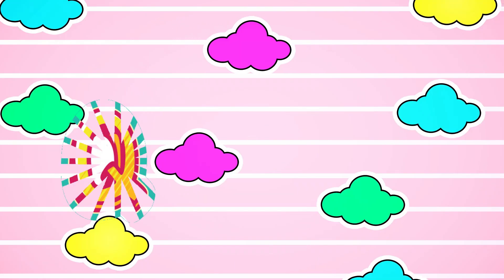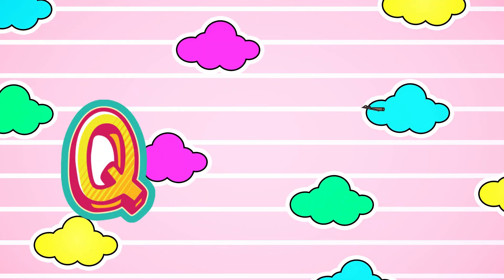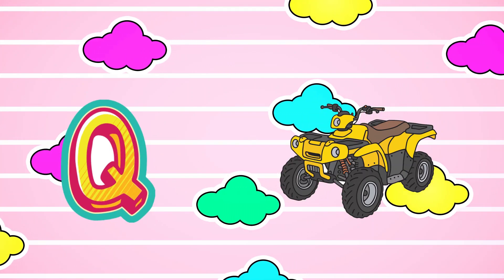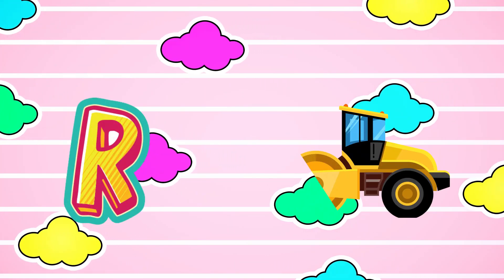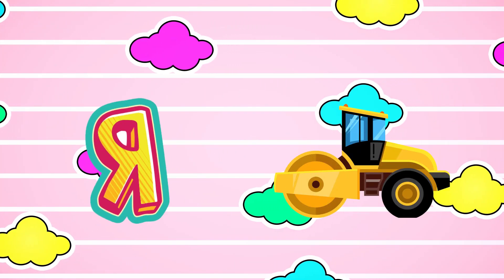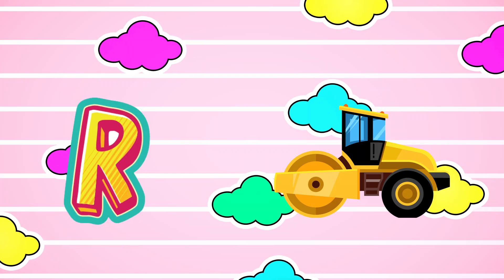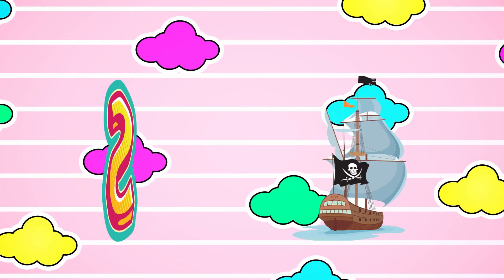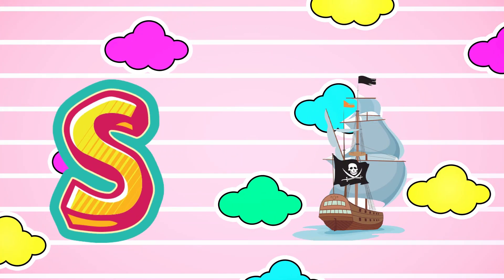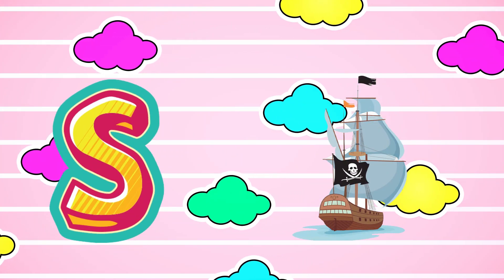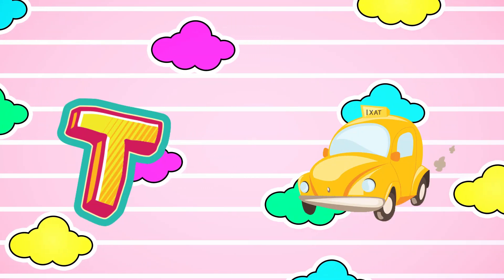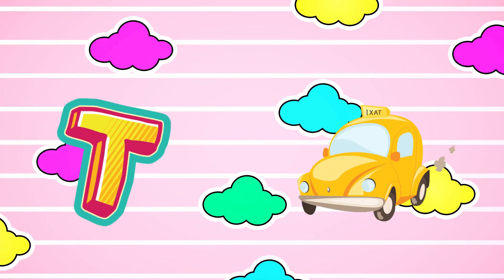Q is for Quad Bike. Quad Bike. R is for Road Roller. Road Roller. S is for Ship. Ship. T is for Taxi. Taxi.